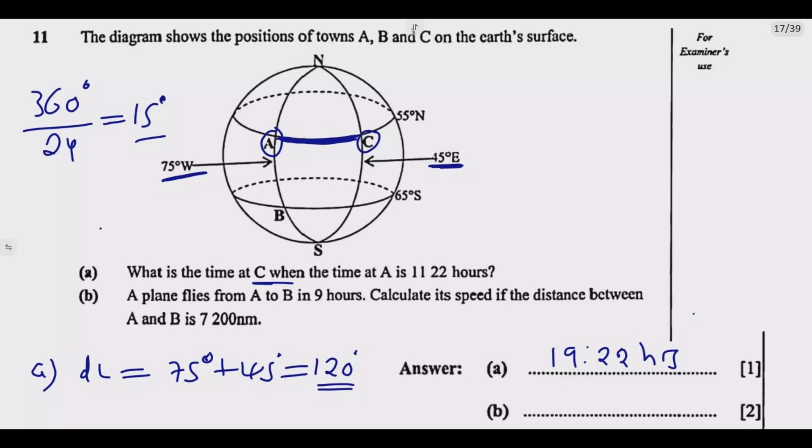We go to B. We are told the plane flies from A to B in 9 hours. Calculate the speed between A and B if this is the distance. So this one is easier because we are given the time. It's 9 hours between A and B. The time it takes to fly from A and B is 9 hours. Then we are told to find the speed if the distance is that. So we use this equation.